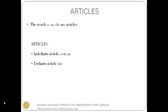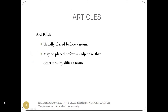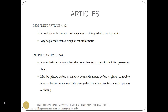Articles: indefinite article a or an, definite article the. An article is usually placed before a noun; it may be placed before an adjective that describes or qualifies a noun. The indefinite article a or an is used when the noun denotes a person or thing which is not specific. It may be placed before a singular countable noun. The definite article the is used before a noun when the noun denotes a specific or definite person or thing. It may be placed before a singular countable noun, before a plural countable noun, or before an uncountable noun when the noun denotes a specific person or thing.